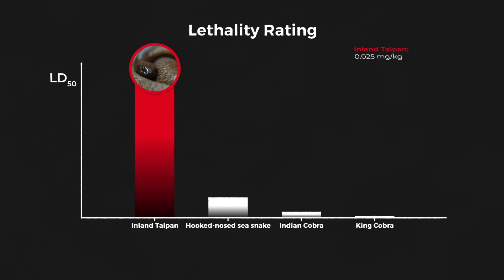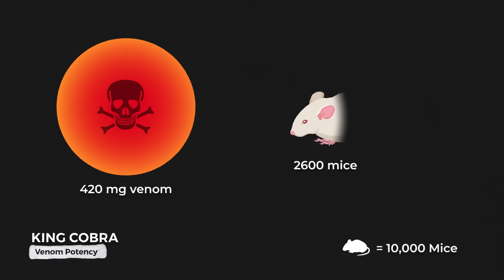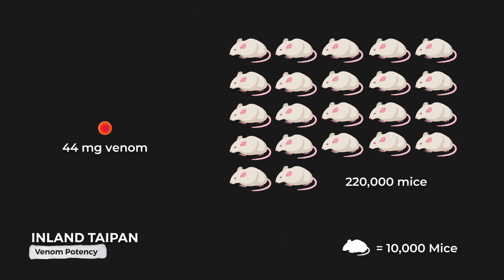According to its lethality rating, the LD50, its venom is about 7 times more deadly than that of the hook-nosed sea snake, around 23 times more potent than the Indian cobra, and 72 times more deadly than the venom of the king cobra. One bite from the king cobra releases on average 420 milligrams of venom, enough to kill around 2,600 mice. But one bite from the inland taipan, which only releases about 44 milligrams of venom on average, could kill up to 220,000 mice.